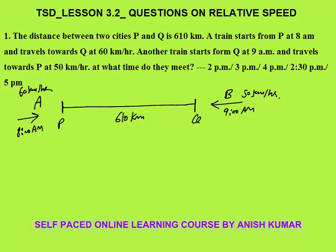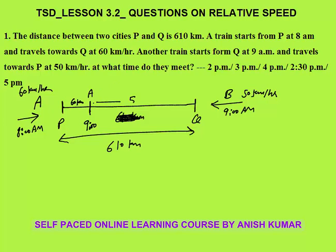The first thing you need to do in such questions is to make the time the same. At 9 AM, train A will have already moved. What is the speed of train A? It is 60 kilometers per hour, so in one hour it covers 60 kilometers. This distance is 60 kilometers, so the remaining distance will be 550 kilometers. Now at 9 AM, both trains are running simultaneously.